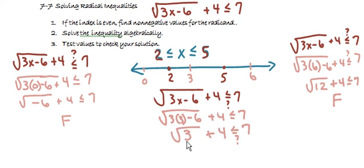Again, estimating, we know that the square root of 3 would be smaller than the square root of 4, which is 2, and that 2 plus 4 would be less than 7.